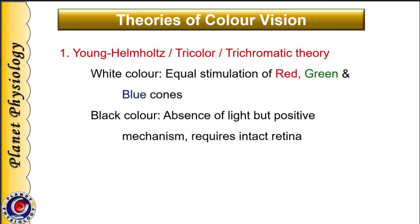Equal stimulation of red, green, and blue cones gives the sensation of white color, whereas absence of light is perceived as black. Please remember that perception of black color is a positive mechanism — it requires an intact retina as well as an intact visual pathway.